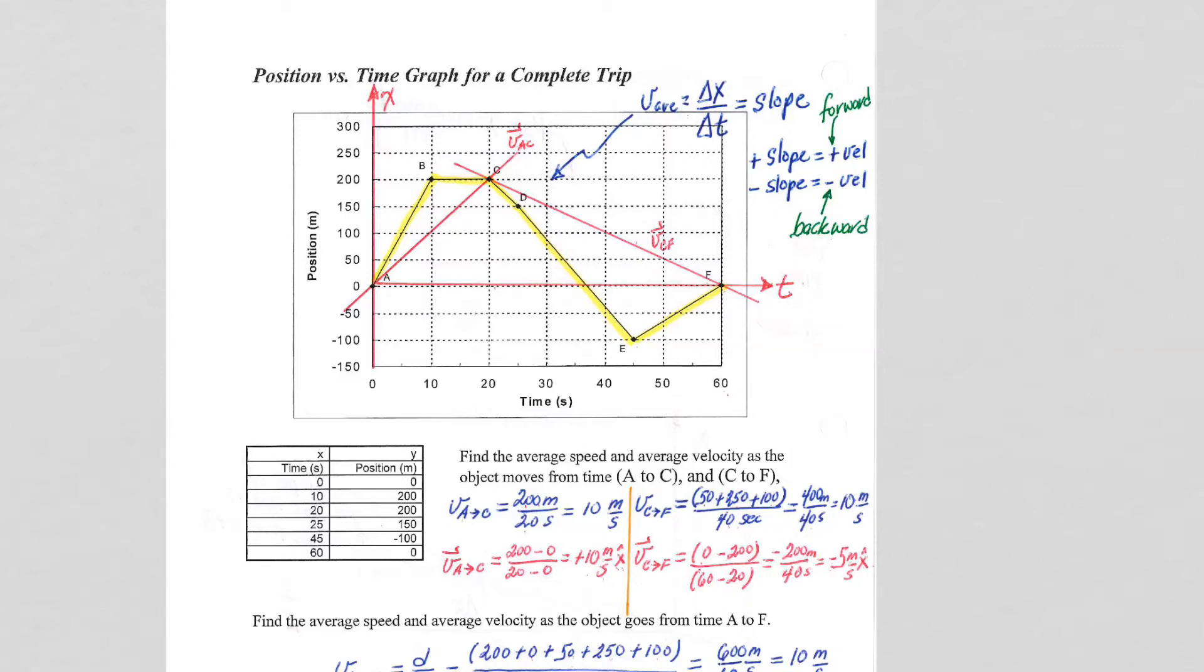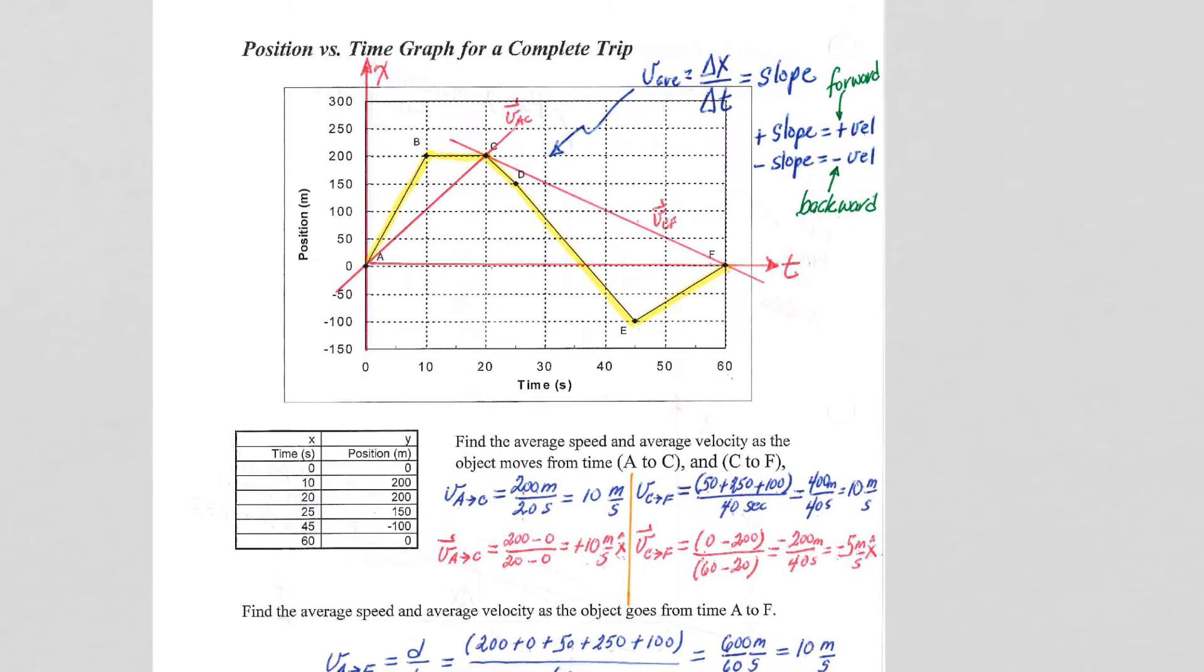In this example, we're now looking at a position versus time graph for a complete trip, meaning that the object begins and ends at the same point.